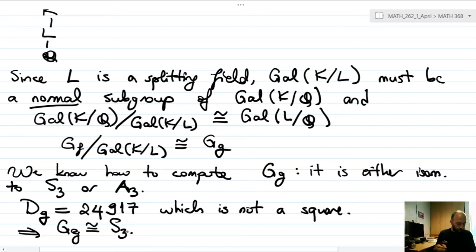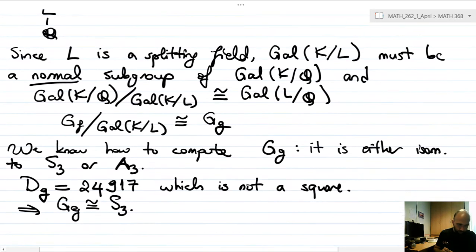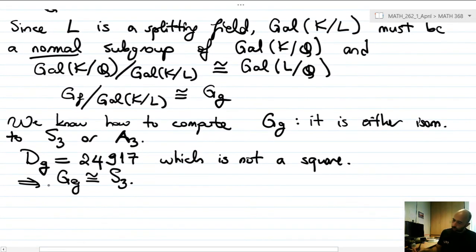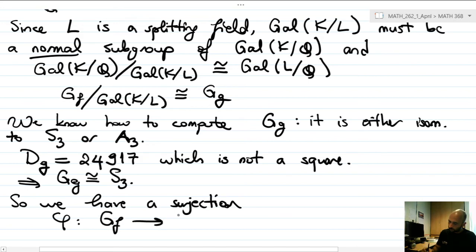So this tells you that G_g is isomorphic to S_3. Okay, so now we are more or less done. So this S_3 must be a quotient of G_f, so we must have a surjection phi from G_f to S_3, which is G_g.